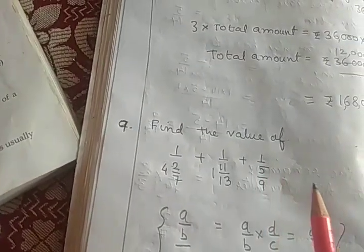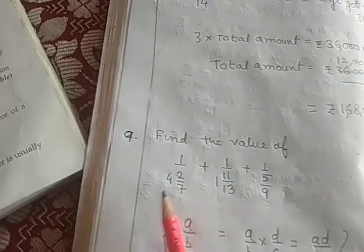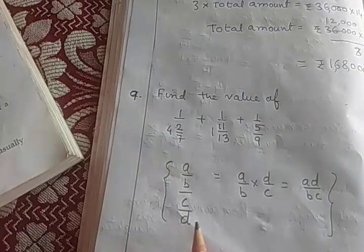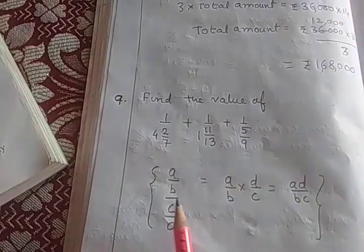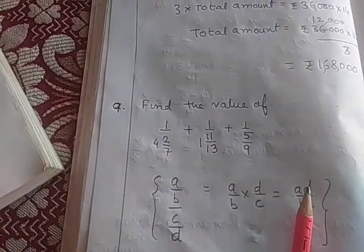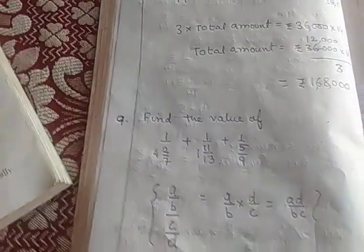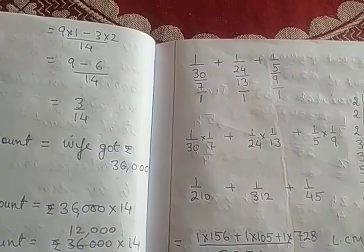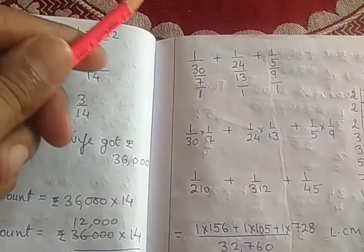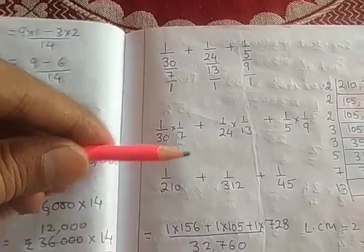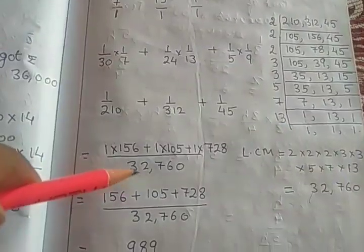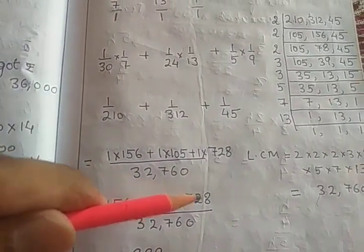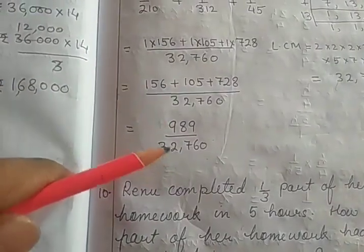To find the value of a complex fraction with a mixed fraction: first convert it into an improper fraction. Rule: A divided by B, divided by C divided by D equals A into D upon B into C — note the book has a wrong answer. Here 1 upon 30 divided by 7 divided by 1: 1 will come up, and 7 stays with 30 in the denominator. After simplification, take LCM: 210 into 156 gives 32,760. Then simplify to get the final answer.